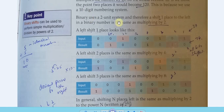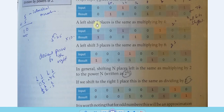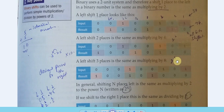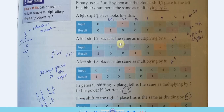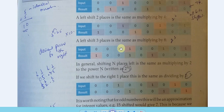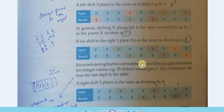Binary uses a two-unit system, therefore shifting one place to the left in binary is the same as multiplying by two. For example, if you calculate the denary value it is 37, and after shifting one bit to the left it is 74 — twice the previous number. Two places would multiply by four (two to the power two). Three places would multiply by eight (two to the power three).